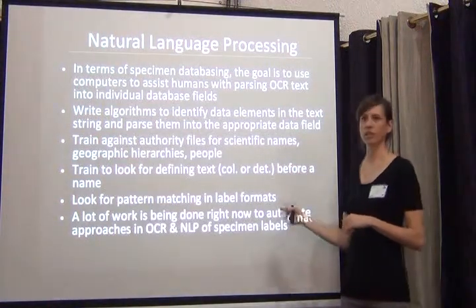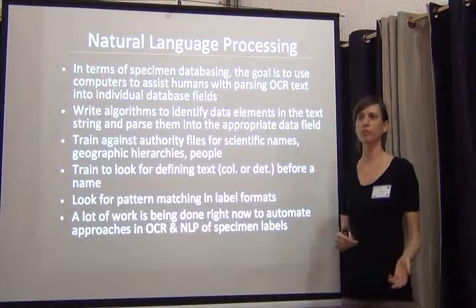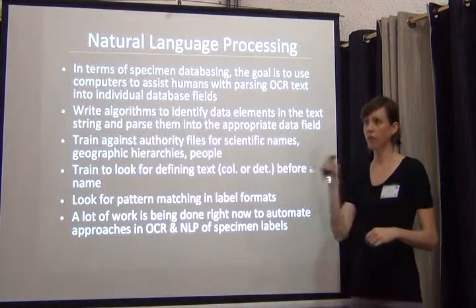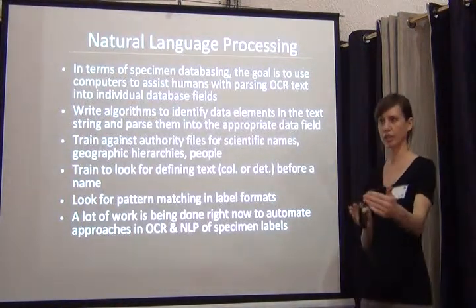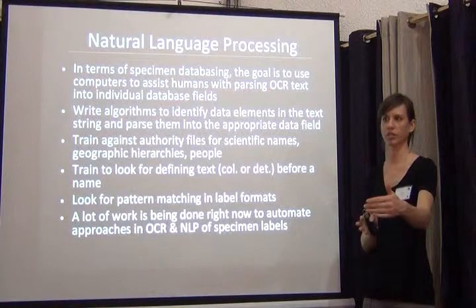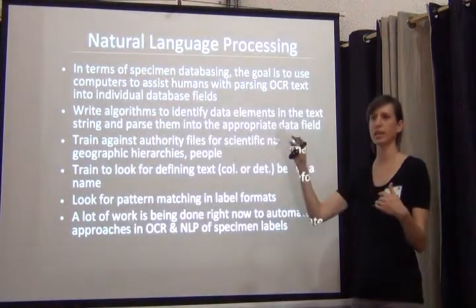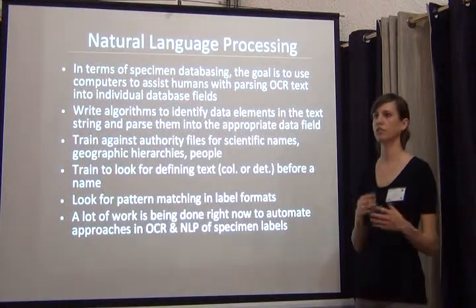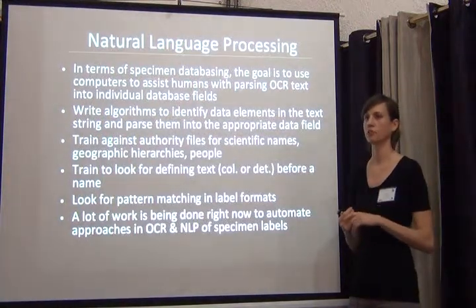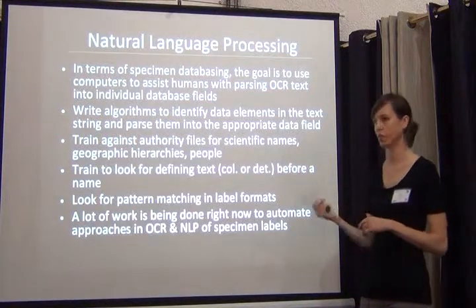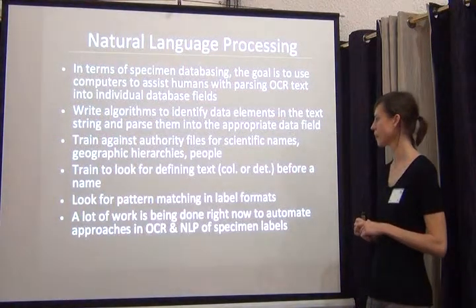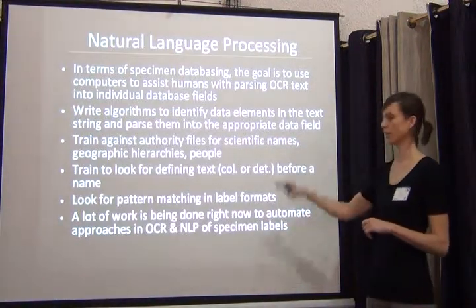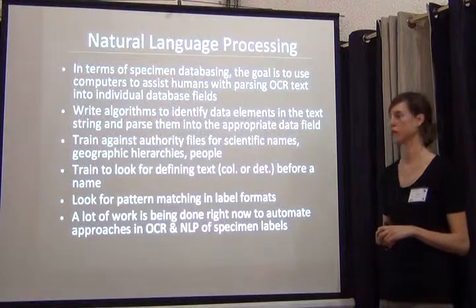You can also look for pattern matching in label formats. A lot of older labels were always in the exact same format — they'd have a specific header and then handwriting, but the footer usually has the collector name in the bottom left-hand corner. You can say, well, anytime you see this header, look in the bottom left-hand corner for the collector. There are a lot of different things you can use for very specialized specific label sets to use computers to help with OCR. This is a really hot topic right now and a lot of work is being done.